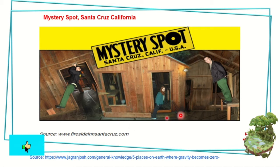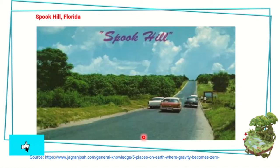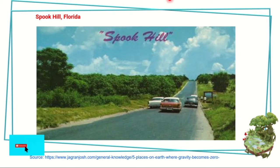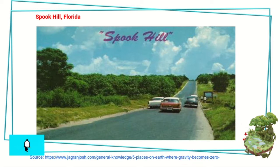The second place is Spook Hill in Florida. Here, if you stop your vehicle or put it in neutral on a slope, you will see that it is being pulled upward towards the mountain instead of rolling downward. For example, if you place a skateboard on a slope, it should roll downward due to gravity. But at Spook Hill, vehicles surprisingly move upward when stopped, instead of going down.